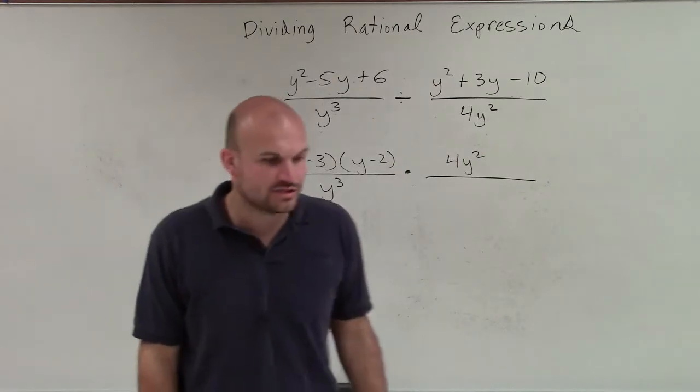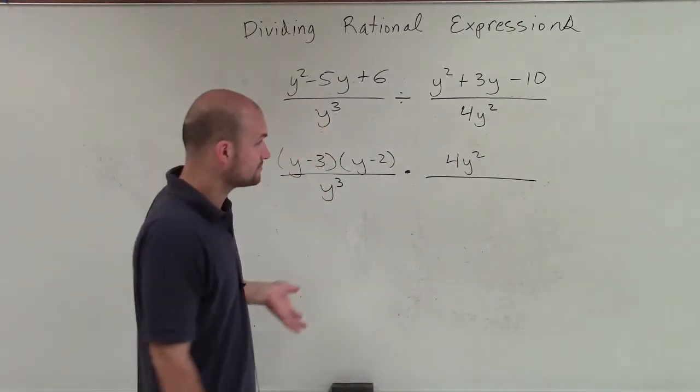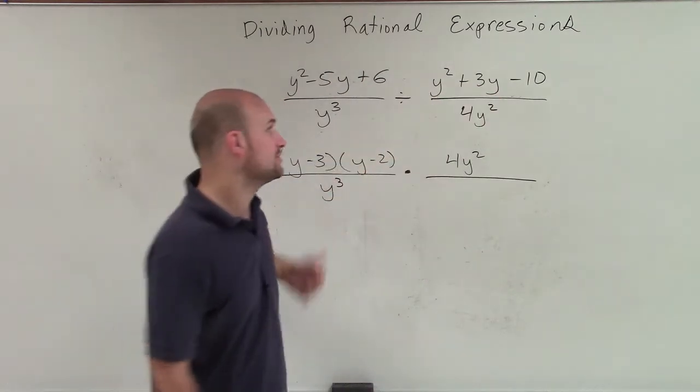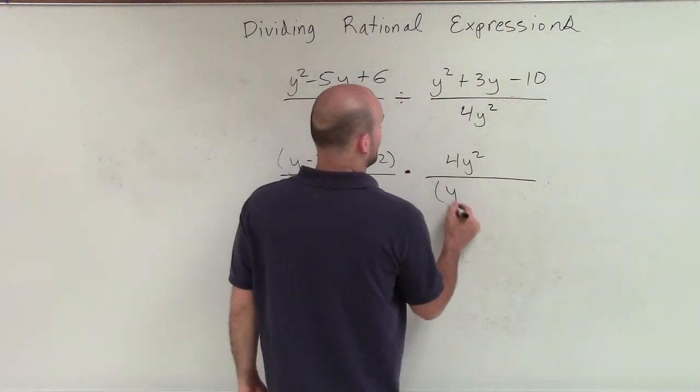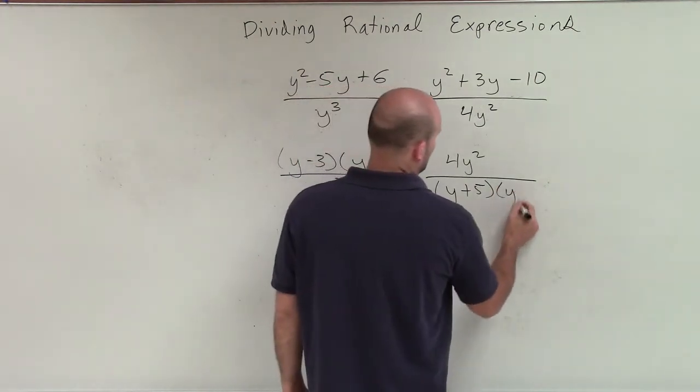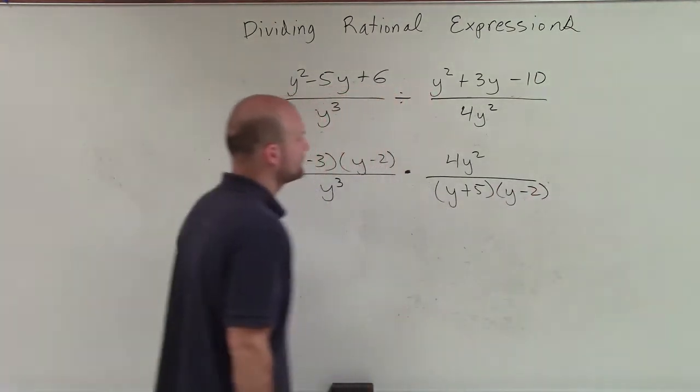So here, I need to determine what two terms multiply to give me negative 10, but then add to give me 3. So you can look at this, and the factored form of this would be y plus 5 times y minus 2, OK?